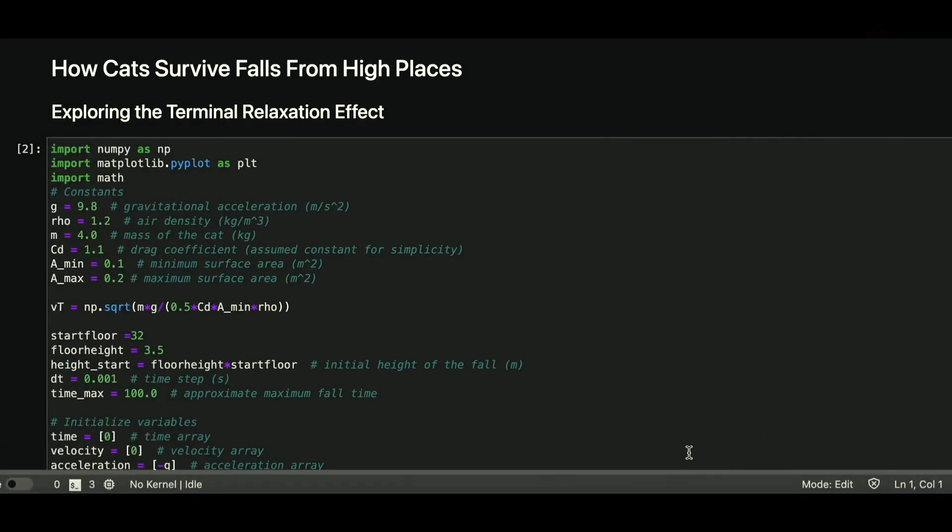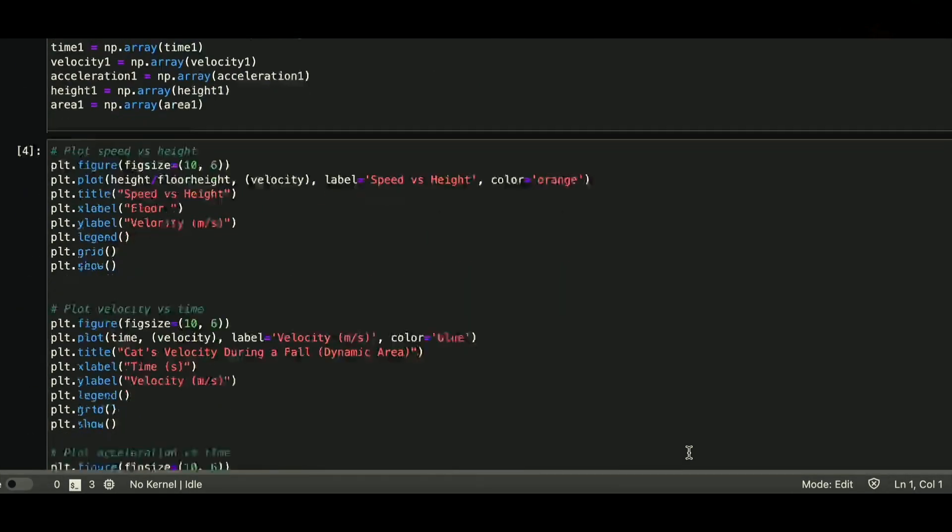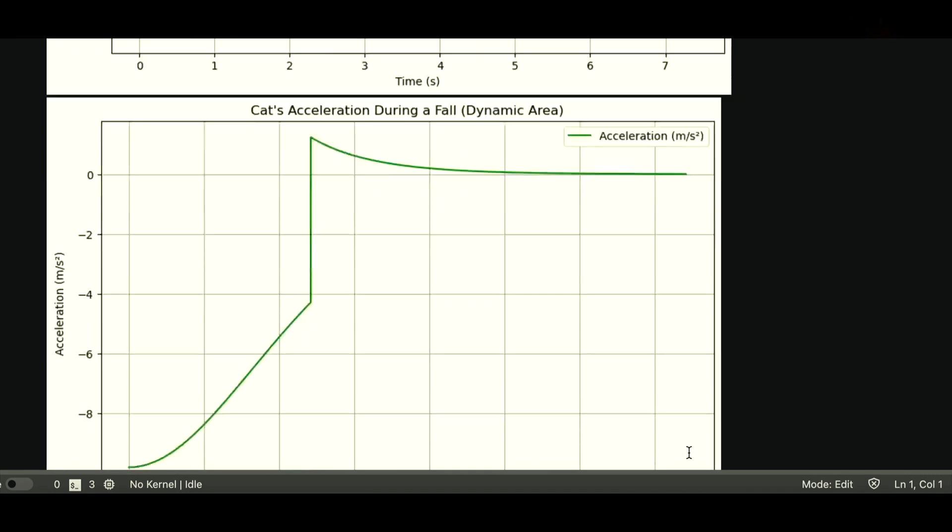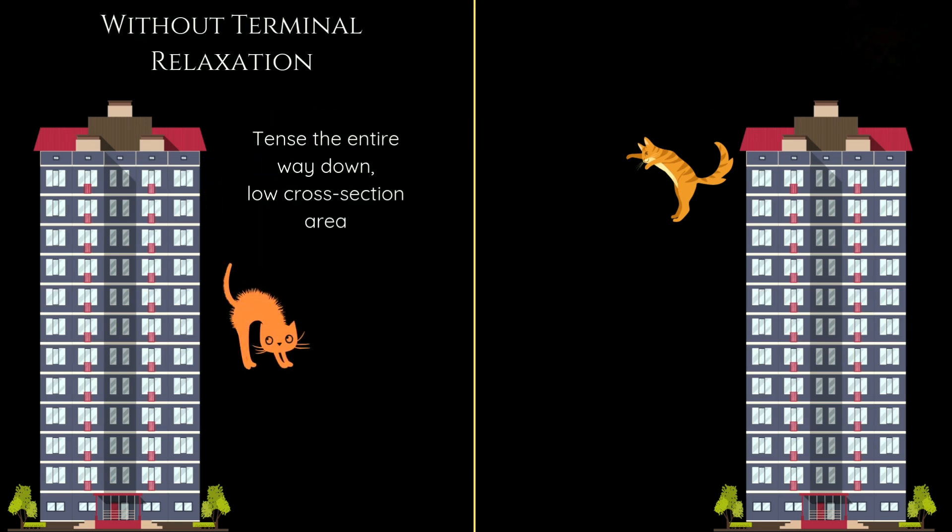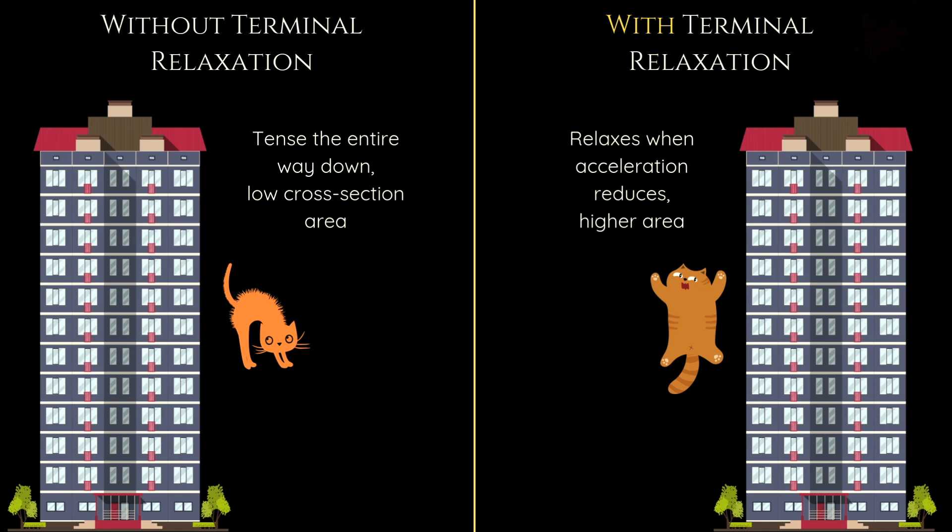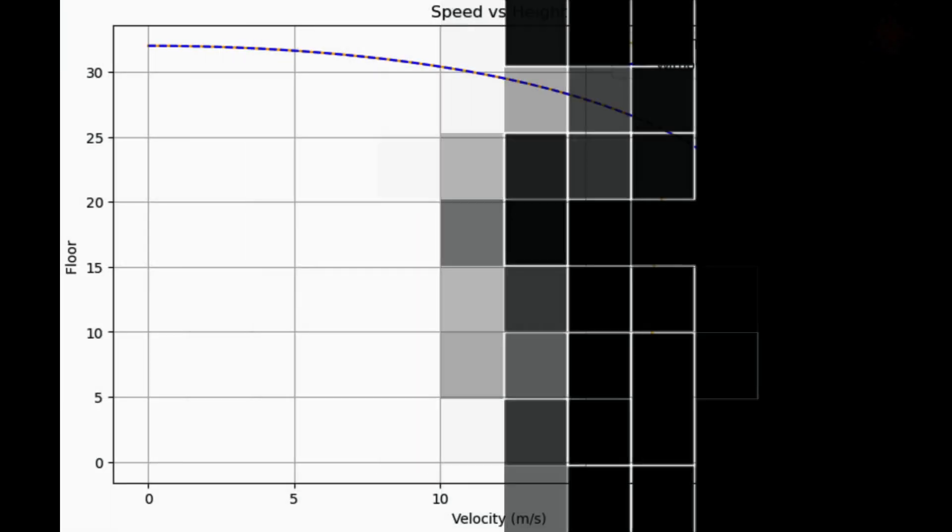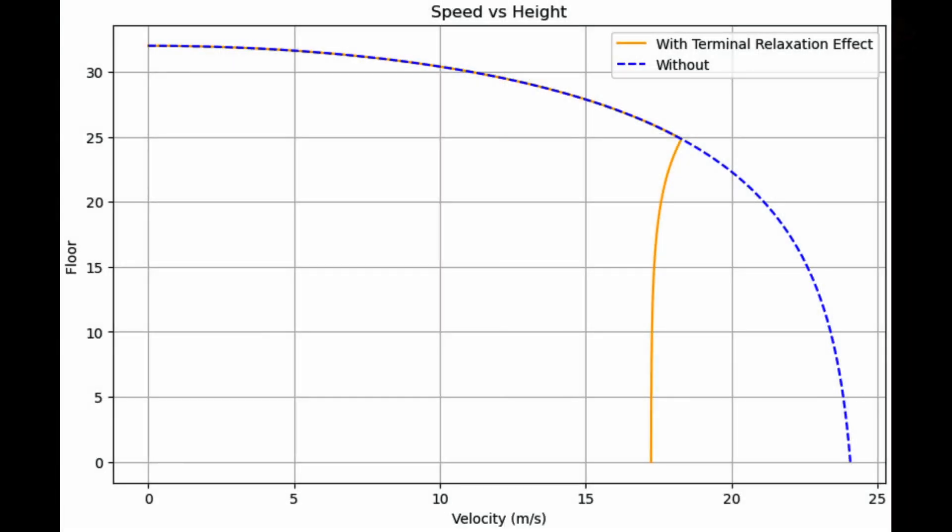I went ahead and wrote some Python code to help us simulate and visualize this. To see why this is possible, we ran a simulation comparing two scenarios. Imagine two cats, just like Sabrina, falling from the 32nd floor balcony—one cat stays tense the entire way down, while the other experiences the terminal relaxation effect.